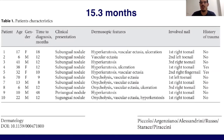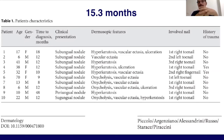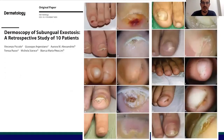The prevalent dermoscopic feature is vascular ectasia, but we also have hyperkeratosis, onycholysis, and ulceration. Toenails are more affected than fingernails, and history of trauma was referred in only two patients. These are all the clinical and dermoscopic findings of subungual exostosis. The clinical presentation as a subungual mass uplifting the nail plate is the most common one.